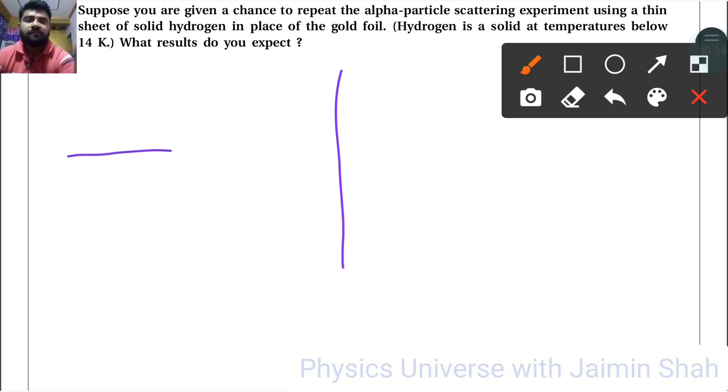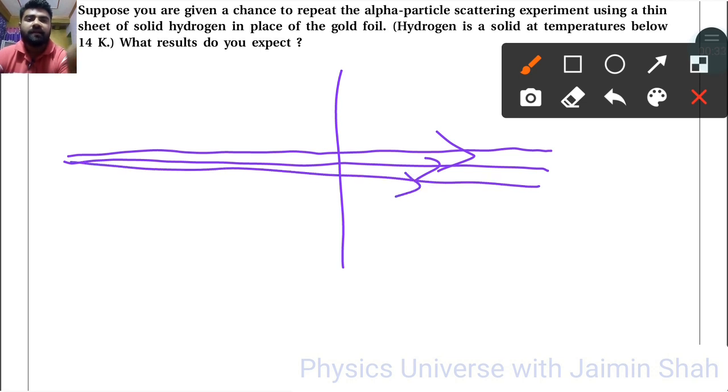alpha particles are going further and further without any, means very small scattering angle we get for that alpha particle. Because earlier we use gold foil and gold foil Z is 79, but hydrogen Z is equal to approximately 1.